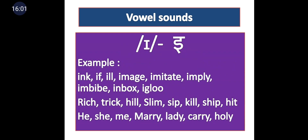The first pure vowel is short E (ɪ). In Devanagari it is 'i.' Examples where it appears initially: ink, if, ill, image, imitate, imply, imbibe, inbox, igloo. The short E sound appears at the start of all these words.